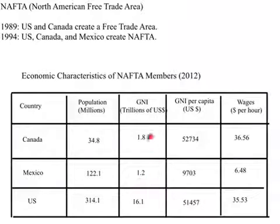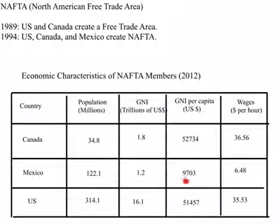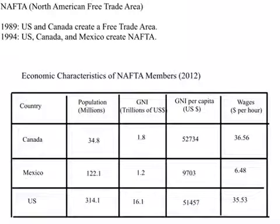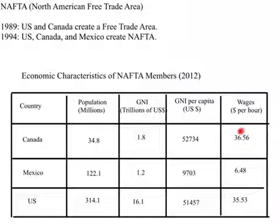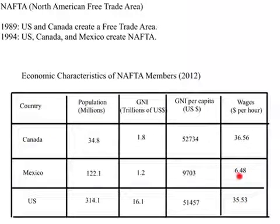Average per capita income in Canada was about $52,000, Mexico $9,700, and the US $51,000. Looking at wages in dollars per hour as total compensation, the US and Canada are very similar, while Mexico's wages are about one-sixth of those in Canada or the US.